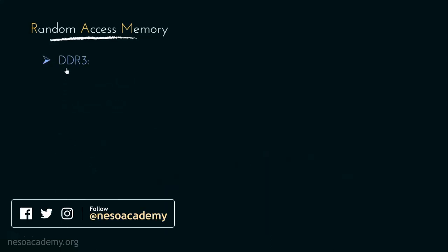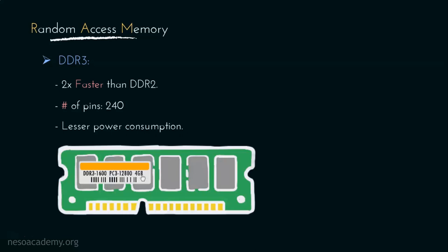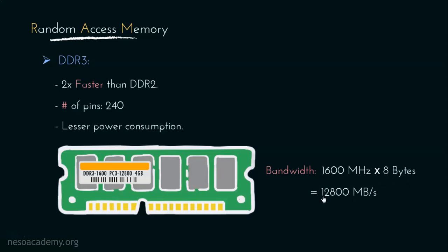Coming to the next one, it is DDR3. These are 2 times faster than DDR2, with a total of 240 pins. Due to their architectural difference, these consume lesser power than DDR2. Consider this 4 GB DDR3 RAM stick — the bottom notch is at a different place than DDR2. It operates at 1600 MHz, and it also has the same 8-byte wide data path, which gives us 1600 multiplied by 8, that is 12800 Mbps, clearly mentioned in the label as PC3-12800.